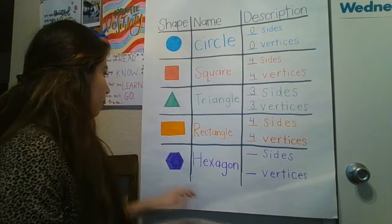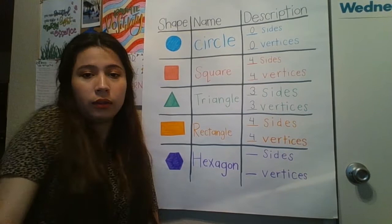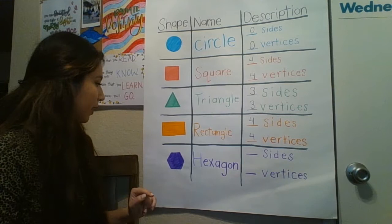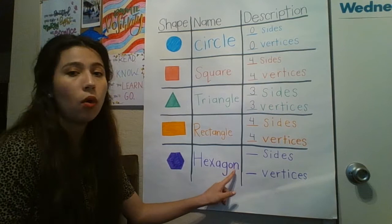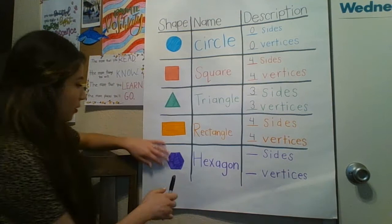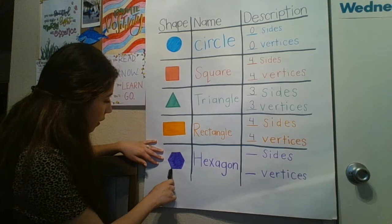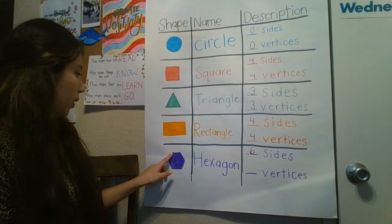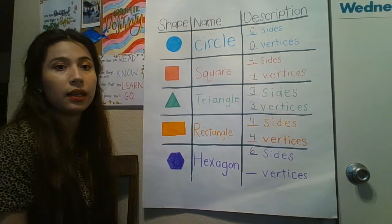Last one — down here. This is a hexagon, a purple hexagon. This is the word hexagon: H-E-X-A-G-O-N. Let's count the sides: one, two, three, four, five, and six — a hexagon has six sides. Now let's count the vertices: one, two, three, four, five, and six — six vertices, six corners. Good job, boys and girls.